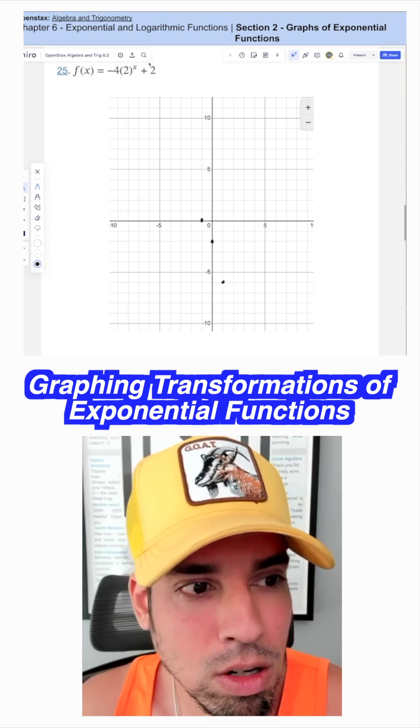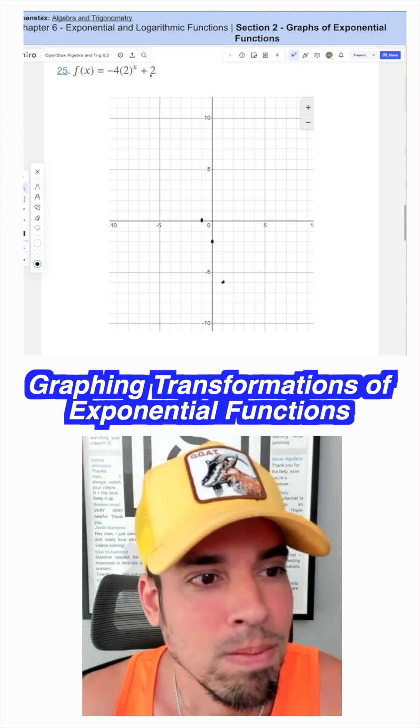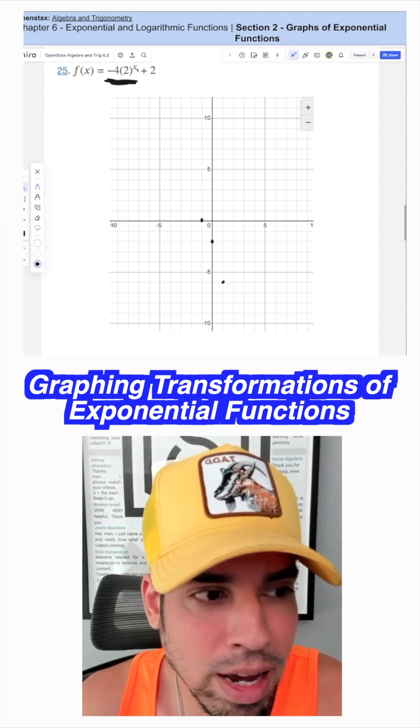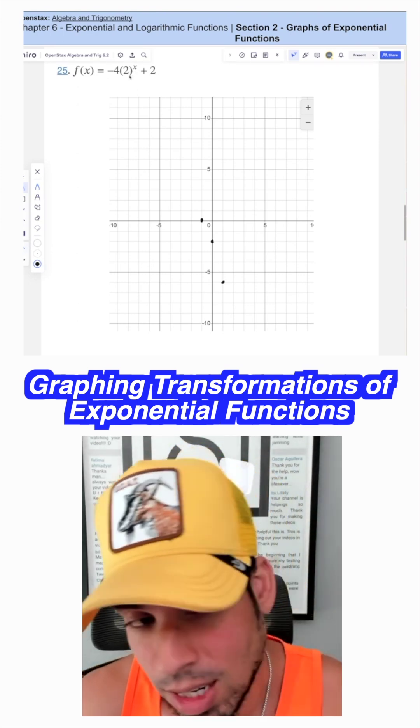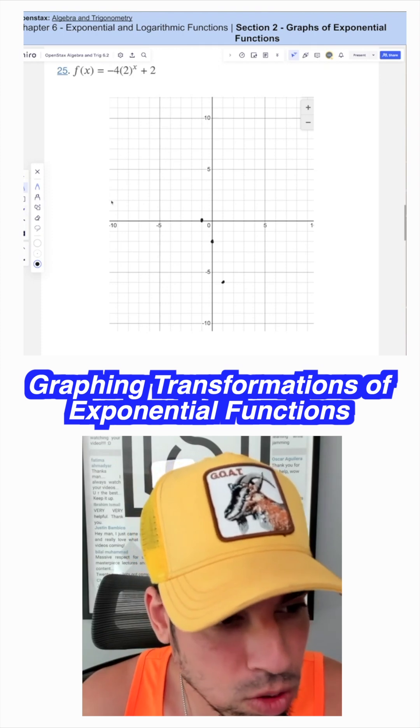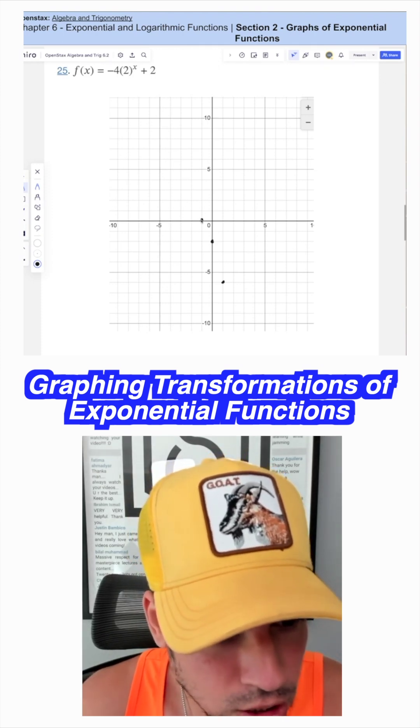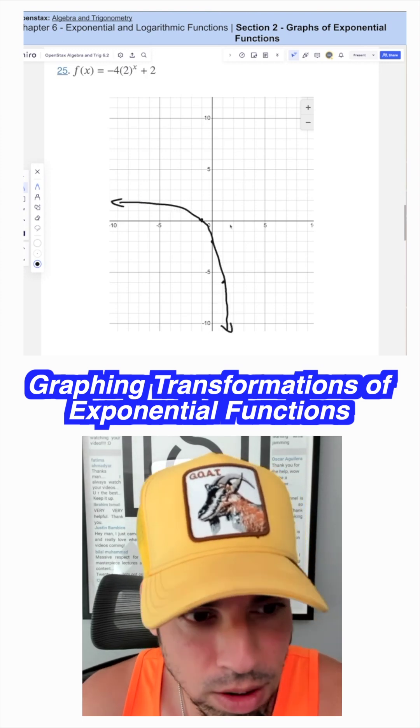Now, I can also tell that since we have this plus 2 out here, and this is always going to be negative, the highest this will ever get is when this gets really close to 0, when x is basically really big negative numbers like negative 100, negative 1,000. So we're going to have a horizontal asymptote at y equals 2. And you can see it's sort of approaching it here as we go to the left. And then as we go to the right, it's going to continue down forever and ever.